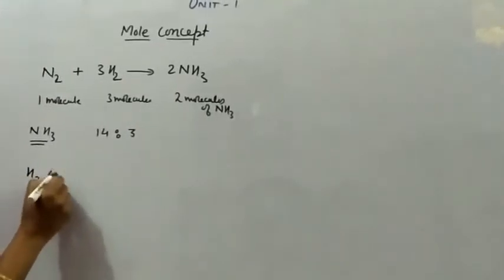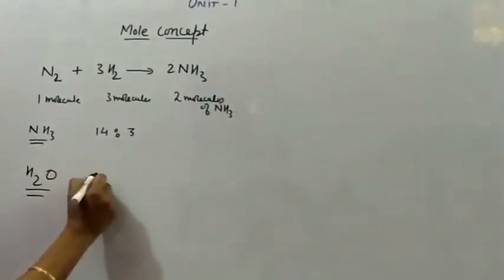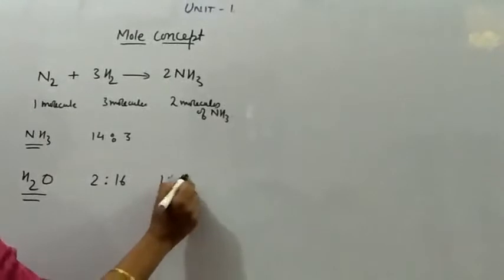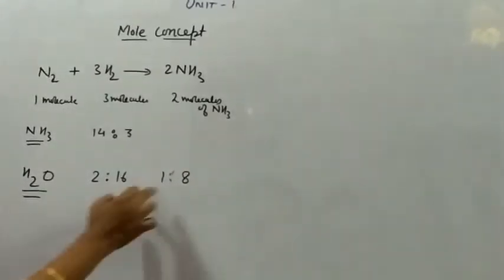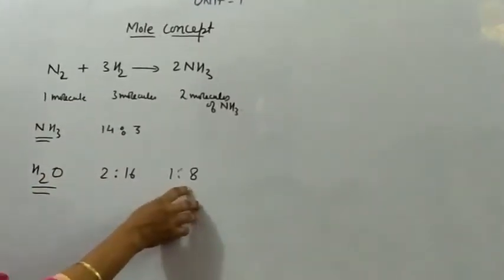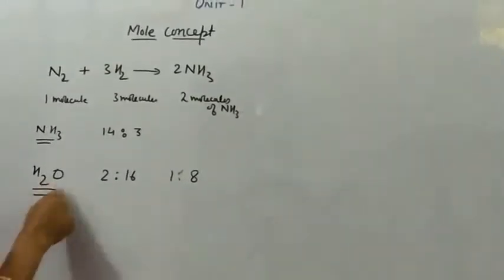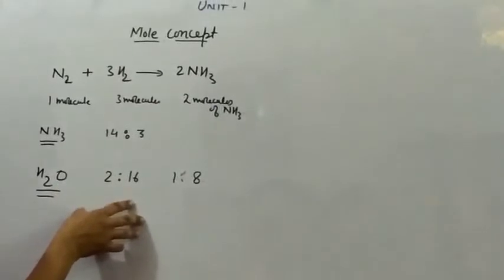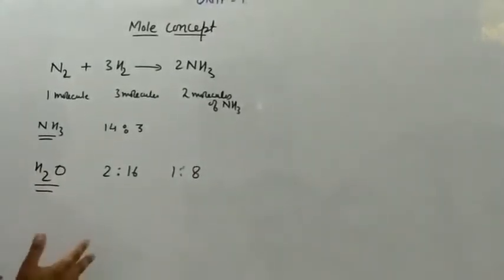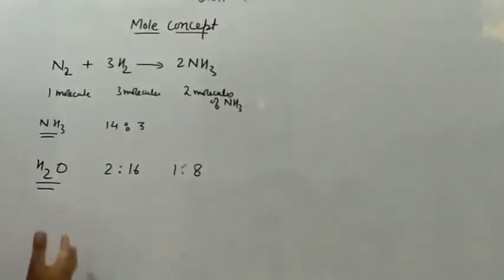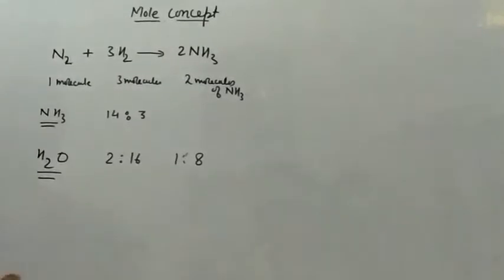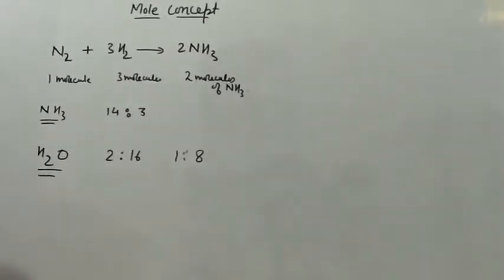Similarly, for water, the combining ratio will be 2 to 16, that is 1 to 8. So 1 to 8 is the combining ratio of water at the molecular level, meaning 2 grams of hydrogen combines with 16 grams of oxygen. When we consider only a single molecule it is fine, but when we take a sample of a substance, it becomes very difficult to count the number of atoms or molecules in that sample.